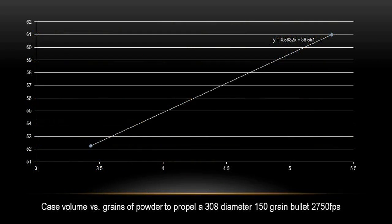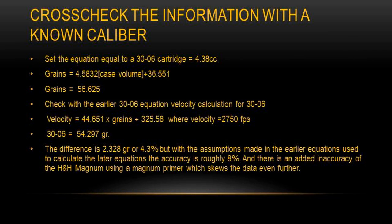If you don't have a headache yet, here it comes. Let's cross check the information to the earlier calculated .30-06 data. First, set the equation we just developed equal to the 30-06 case capacity. This yields 56.625 grains.